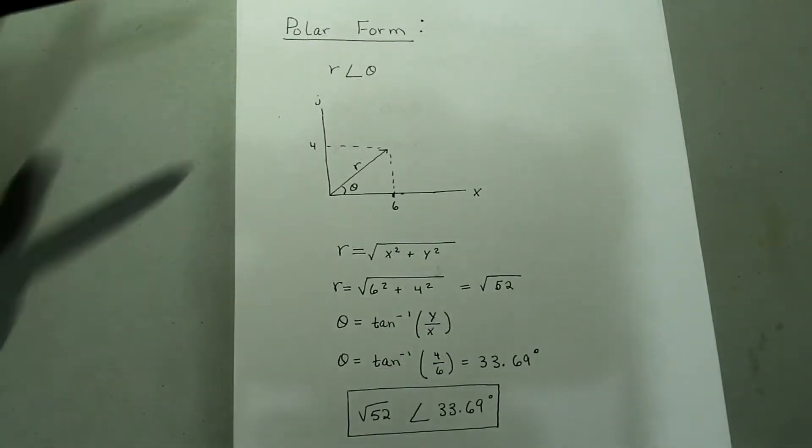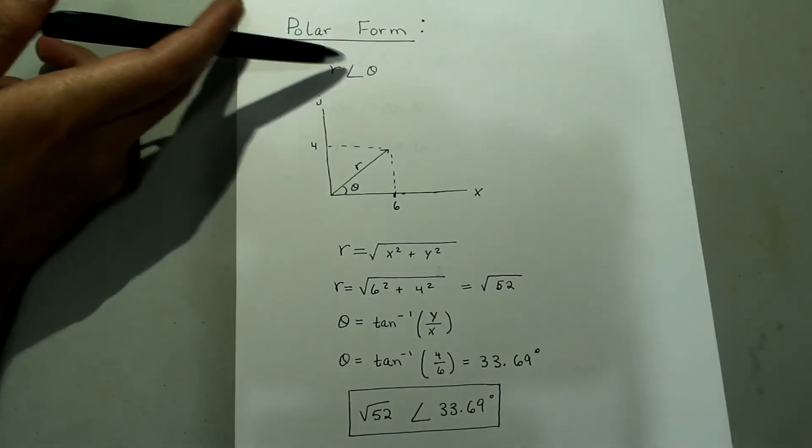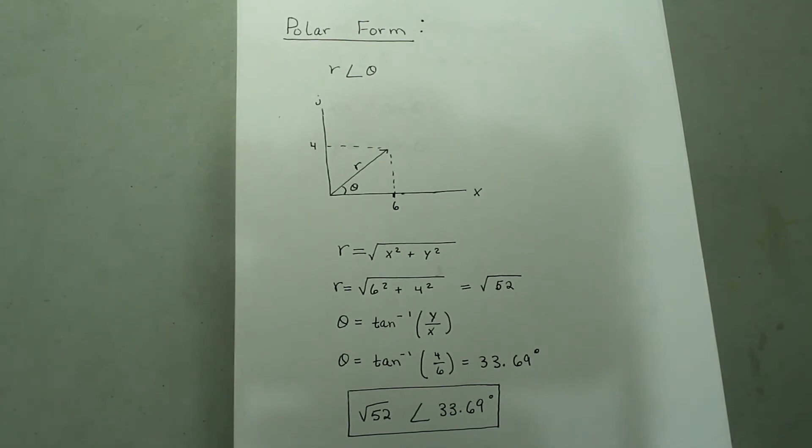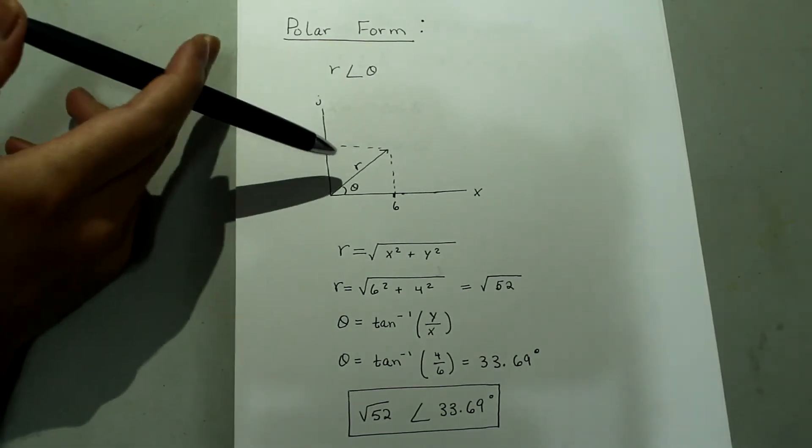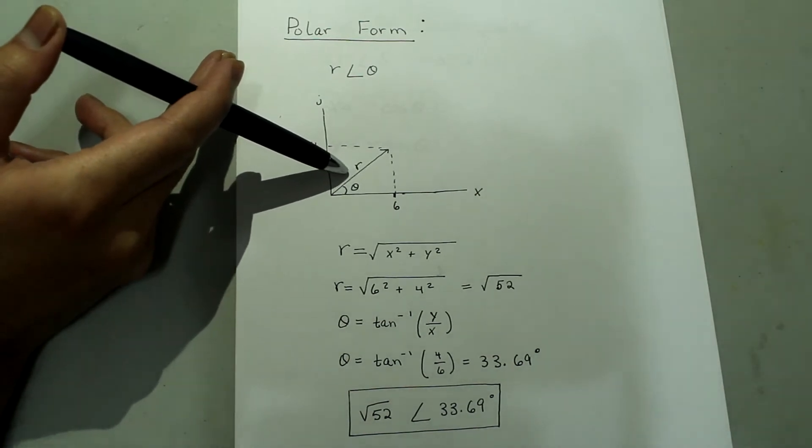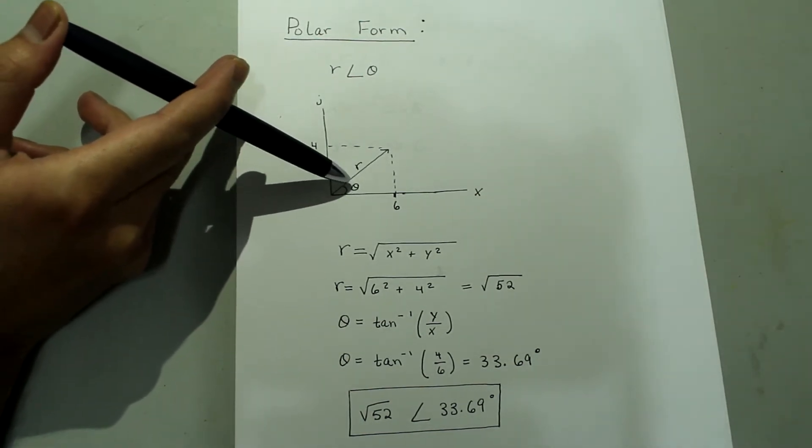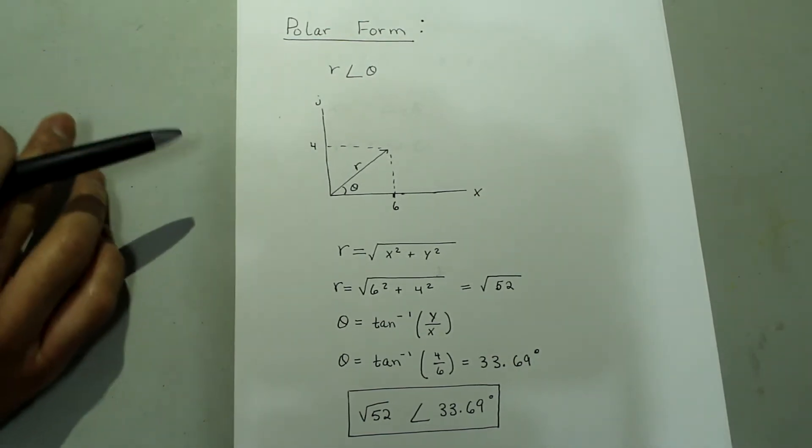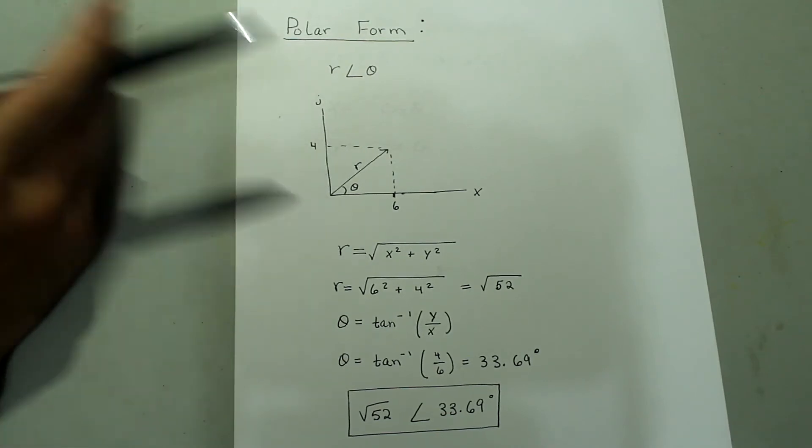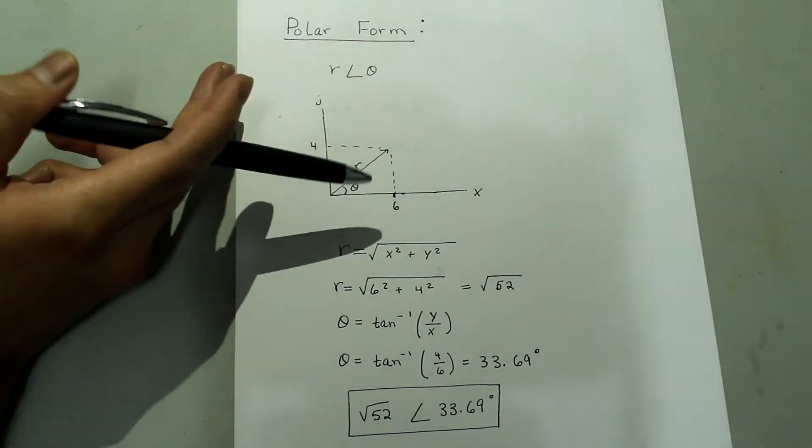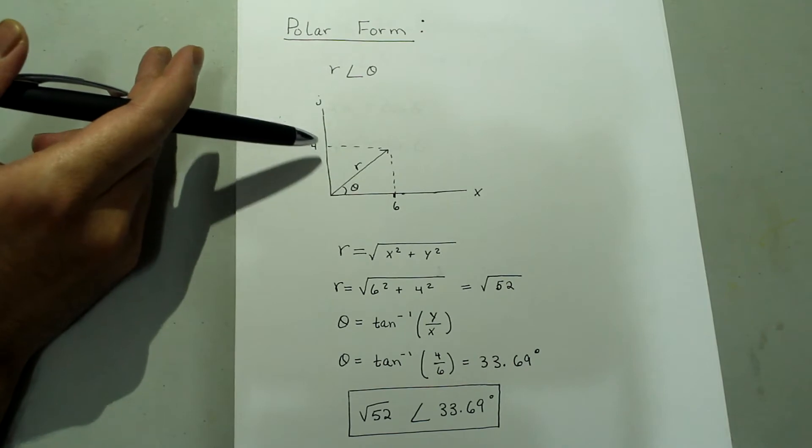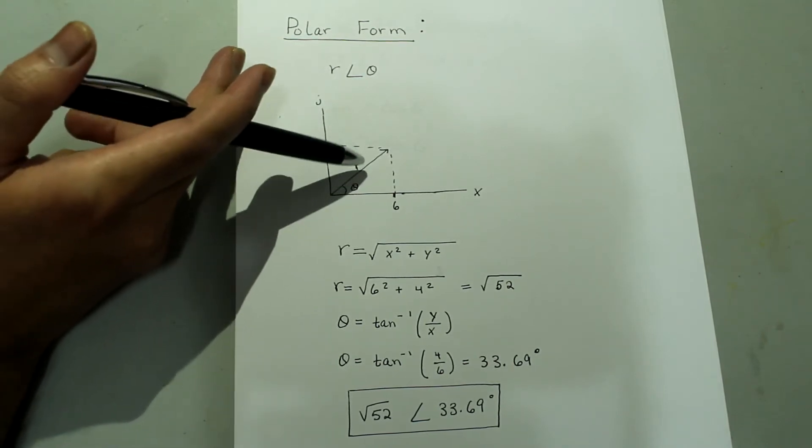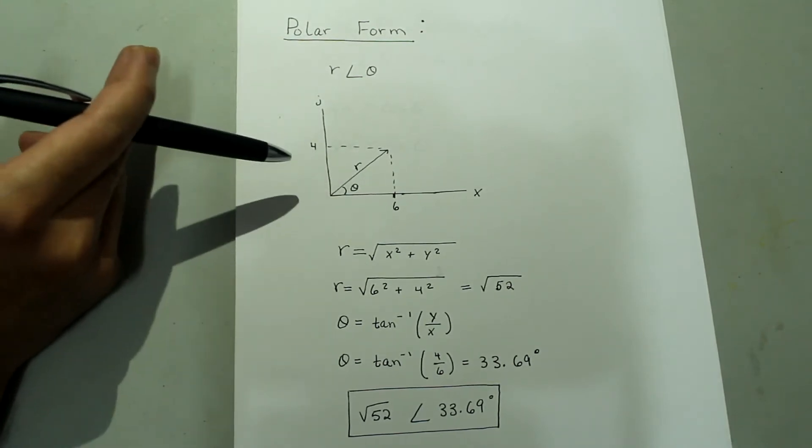In polar form, we have r and then theta with this symbol in between to indicate that theta is an angle. So we have r, which is the radial distance from the origin, and theta, which is right here. So if we take that same coordinate from last time, 6 plus j4, we're going to need r and theta to write it in polar form.